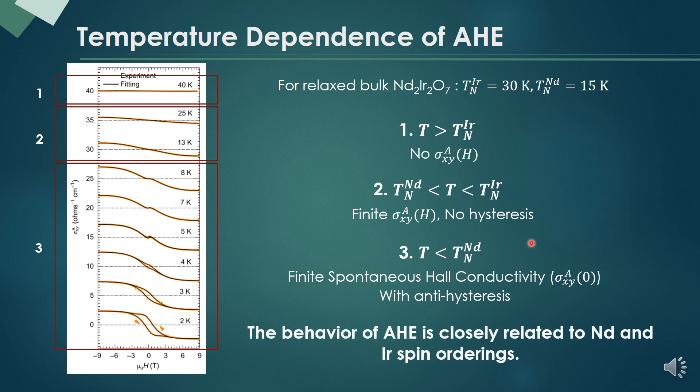Therefore, we conclude that the behavior of anomalous Hall conductivity is very closely related to neodymium and iridium spin orderings.